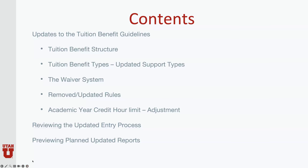What we'll cover today in this training is updates to the tuition benefit program guidelines, including tuition benefit structure, tuition benefit support types, switching to the waiver system, updated rules, as well as academic year credit hour limit adjustments. We'll also be reviewing the updated entry process and previewing planned update reports.